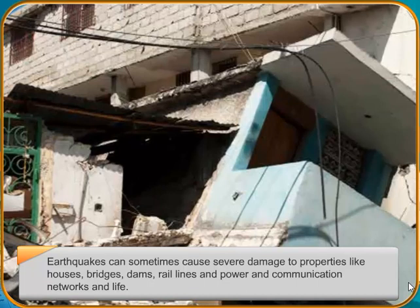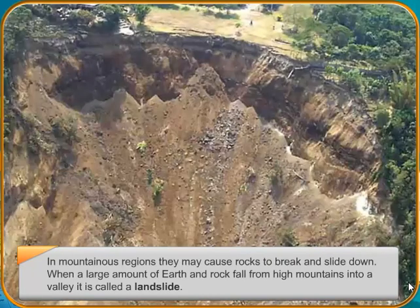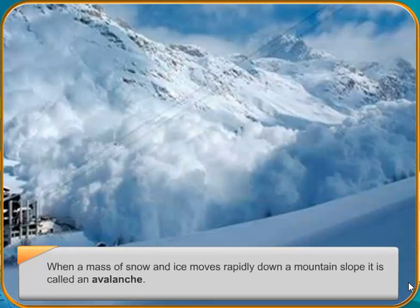The Himalayan region and the areas surrounding it are prone to earthquakes. Japan has about 3 minor earthquakes every day of the year. The Pacific Ring of Fire is an area in the basin of the Pacific Ocean where a large number of earthquakes and volcanic eruptions occur.